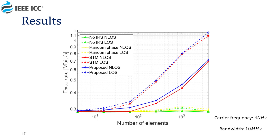It can be seen that our algorithm achieves better results than the STM algorithm for every number of elements in the IRS, with the gap being more significant for users without line of sight to the IRS.